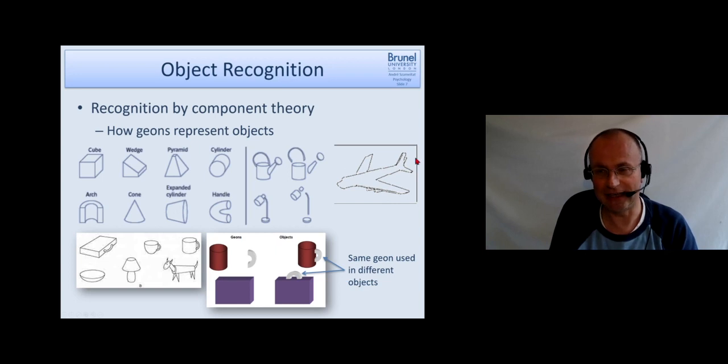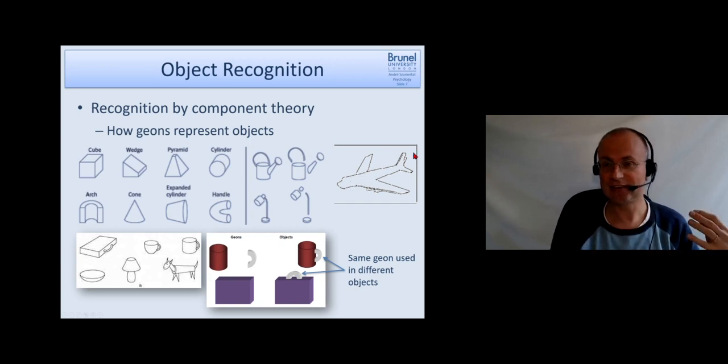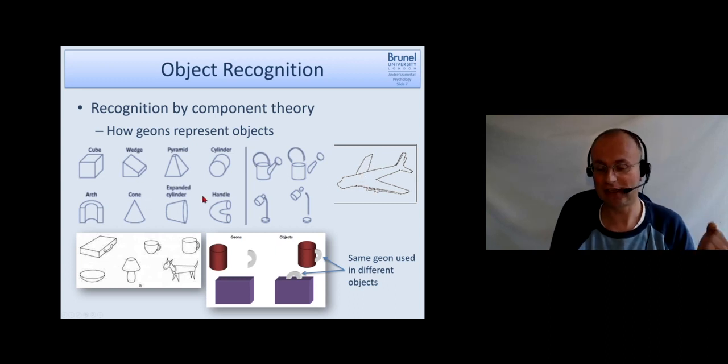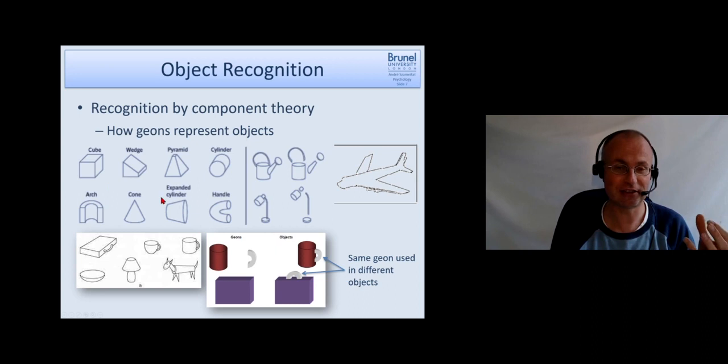Another example, and I just present that here because he used stimuli like that in his experiments, is that you have complex things like a plane which is then built up of geons like the wing and the main body and things like that. So you can also represent things like that with these elements and remember these are just a selection. He proposed 36 of them.